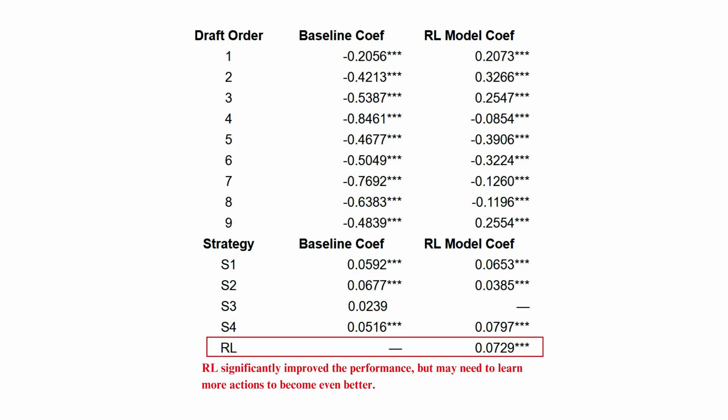The results show that reinforcement learning improved significantly, about 7%. And yet, it's still not the best — the S4 strategy still performs better. That's not surprising at all, because RL was limited to choosing from only three strategies.